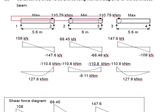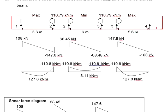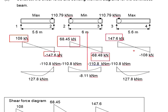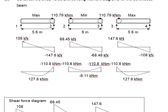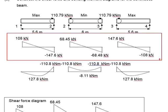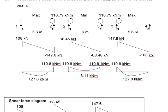Since the beam is symmetrical at the center, you can expect the values to be totally identical on the other side. Once you have obtained the shear force in each span, your next step will be finding the moment.